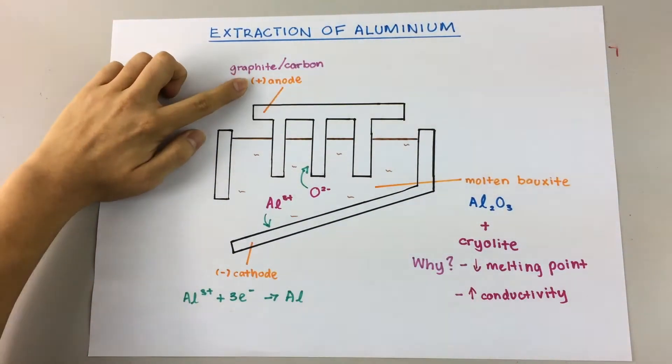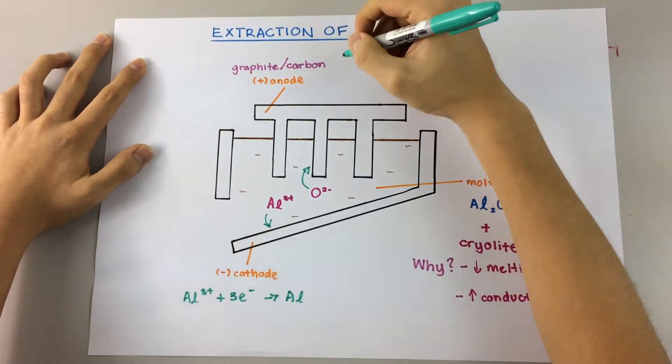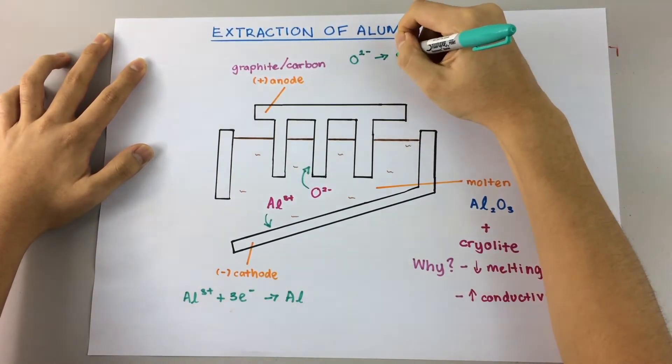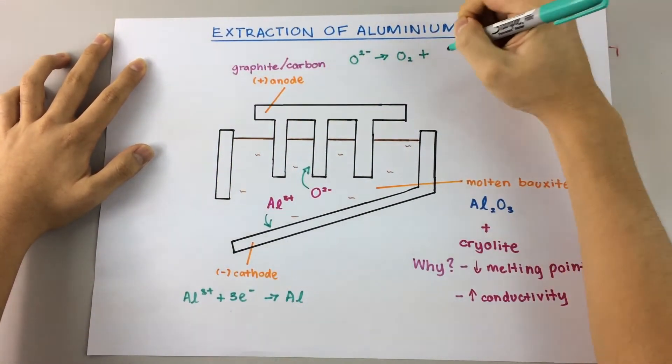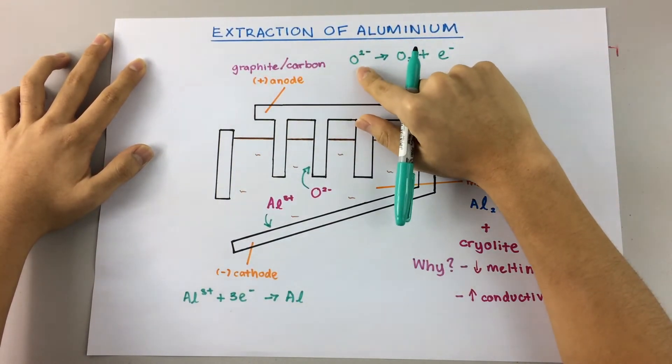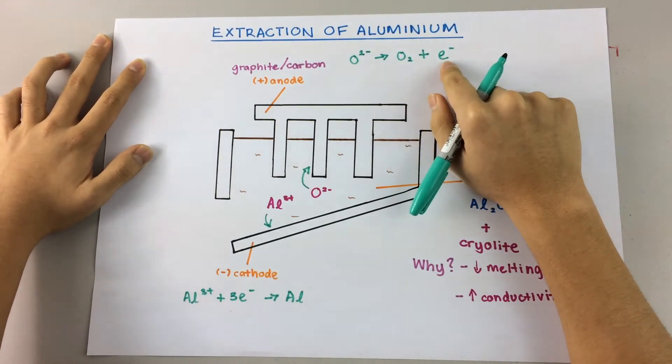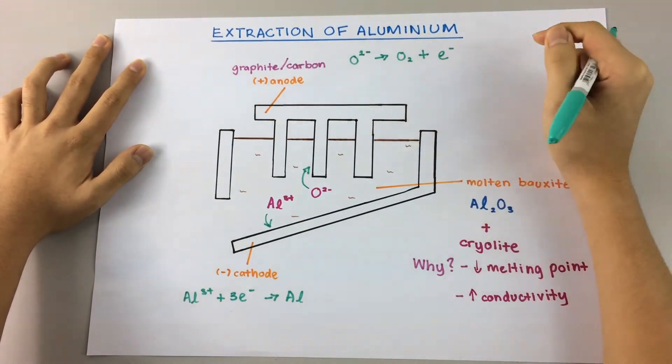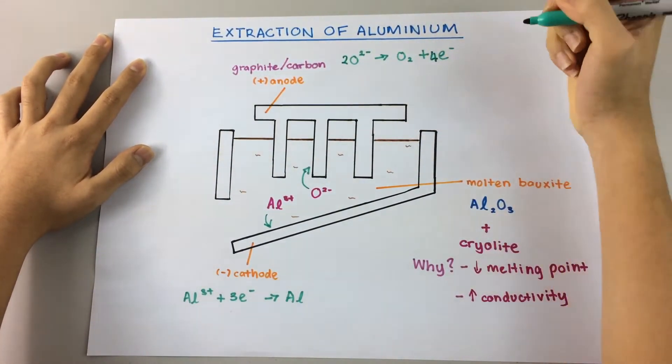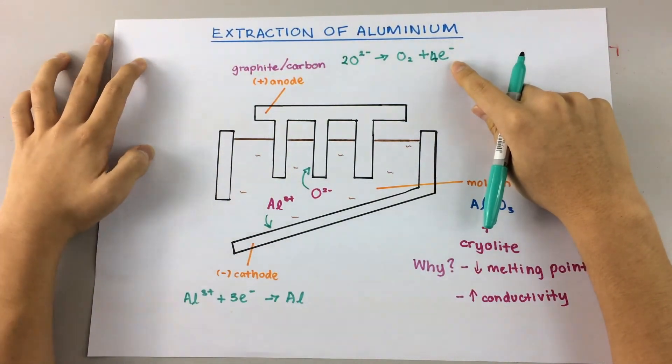Now over here at the anode, the ionic half equation that occurs is O2- arrow, the oxygen atom, plus electrons. So we have the oxide, which becomes the oxygen atom, plus electrons, showing that the oxide loses electrons in order to form oxygen. So balance that again, and that will be your balanced equation.